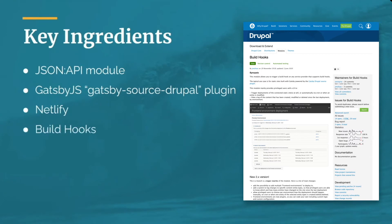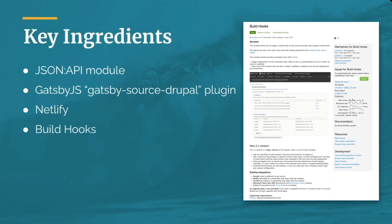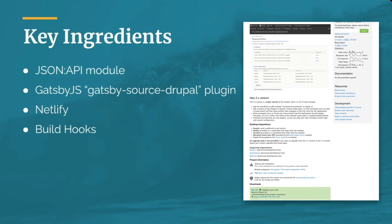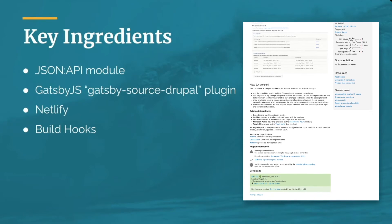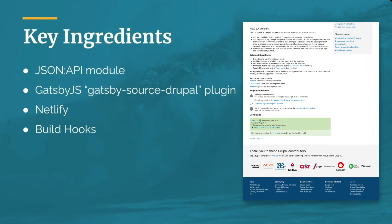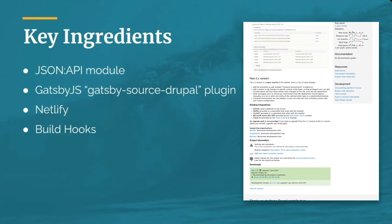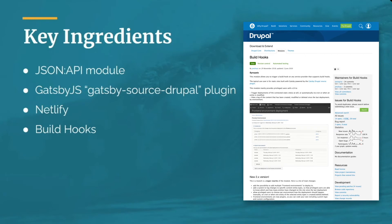The next ingredient is optional but helpful, and that is the build hooks module for Drupal. The build hooks module has a connector with Netlify that allows you to easily trigger new builds in Gatsby from Drupal. It essentially rebuilds the site every time you tell it to rebuild. This module makes it easy to configure so that every time you save a piece of content, you can trigger a new rebuild automatically.